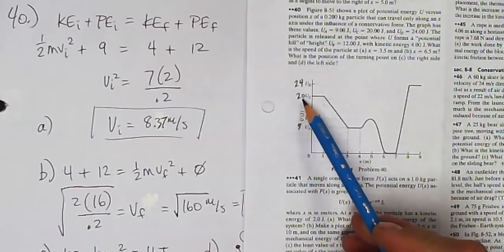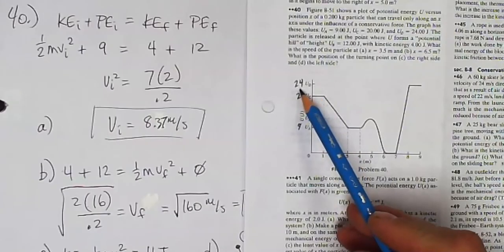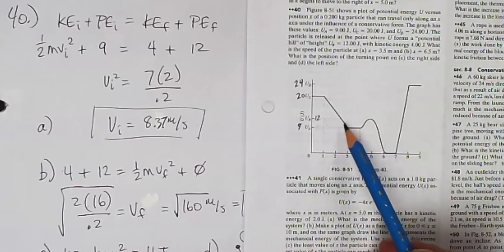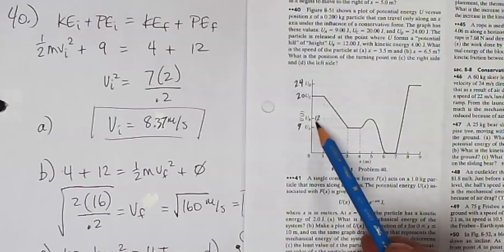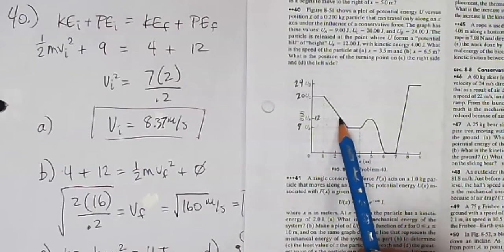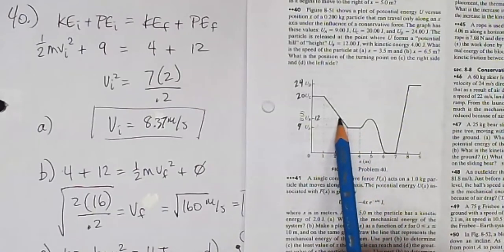UC 20 joules, UD 24 joules. The particle is released at the point where U forms a potential hill of height UB equals 12 joules, right there. And at that spot, it has four joules of kinetic energy.